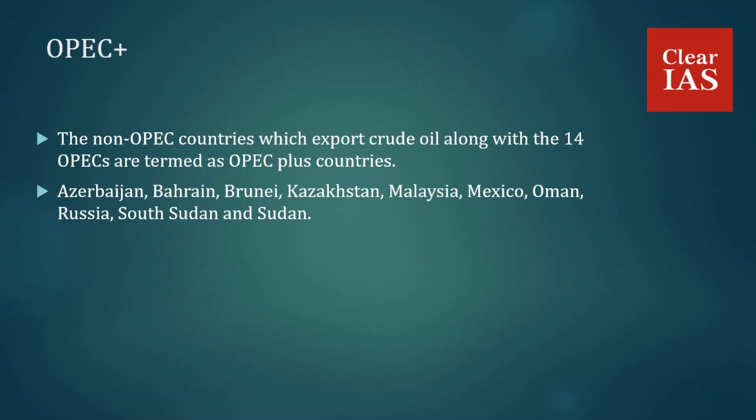As for why OPEC Plus came into existence: Russia concluded a Vienna Agreement in 2016. At that time, Russian leadership believed it would help prepare the country for the Russian presidential elections in March 2018, and higher oil prices would ensure the ruling regime's financial capacity to lead a successful electoral campaign.